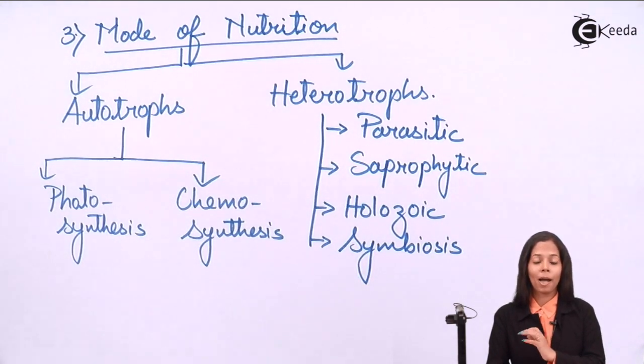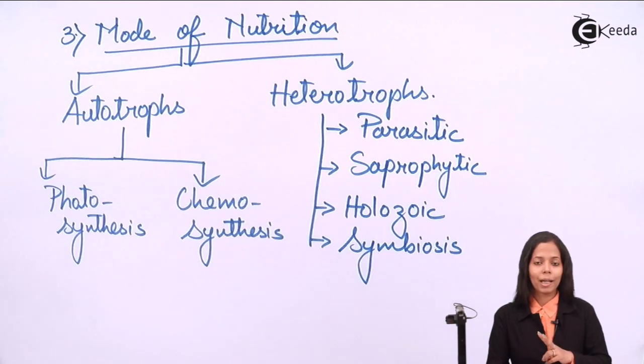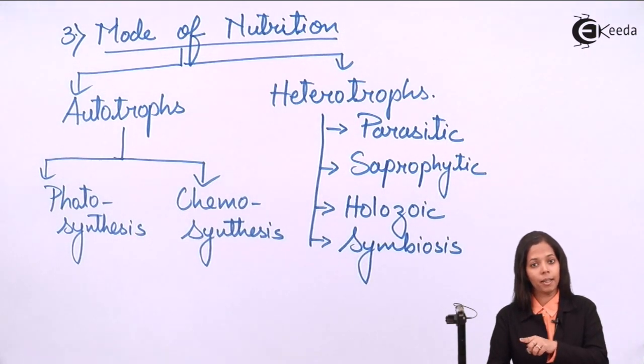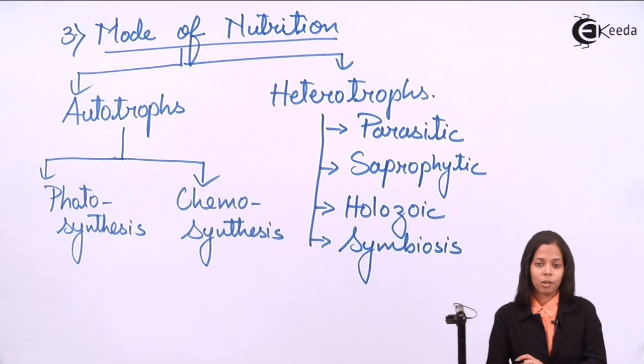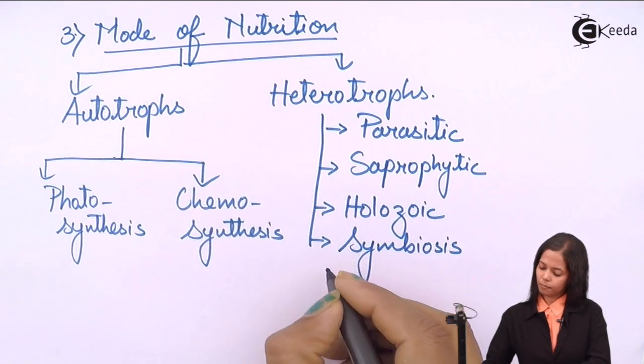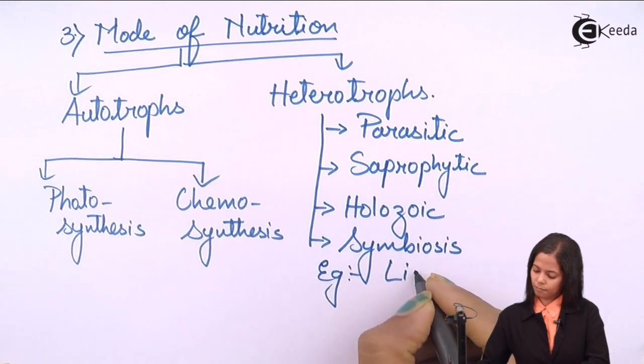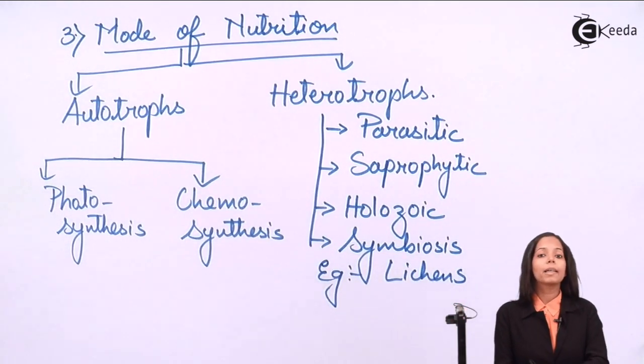Last one is symbiosis. Symbiosis means mutual understanding. Two organisms come in association - one will help the other in one way and the other will help the first one in another way. So they are helping each other, meaning they are having a symbiosis relationship. Example is lichens. Lichens are made up of algae and fungi. Algae prepare food for fungi and fungi give body support to algae.